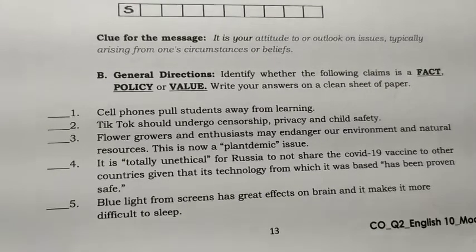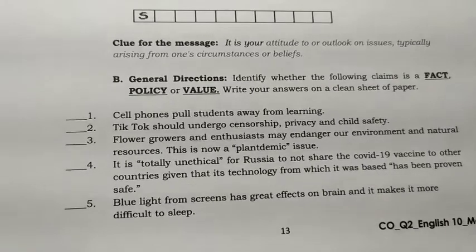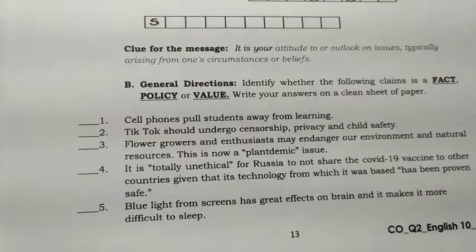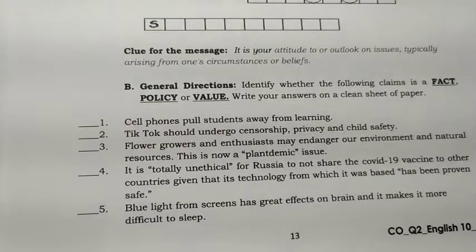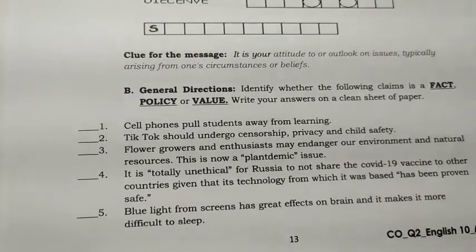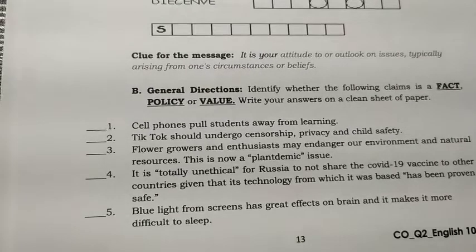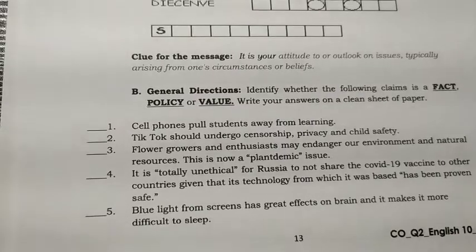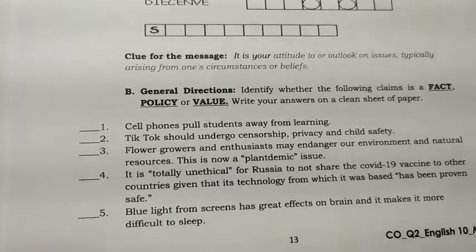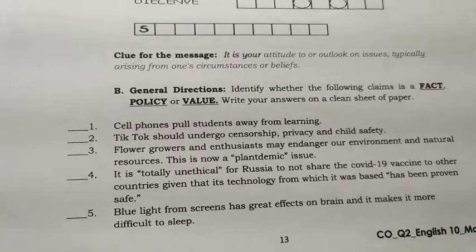Fact shows how true or not true something is. Policy asks how effective it should be — should it be followed or implemented or not. Value shows the significance and importance of a thing to be discussed, and what opinion or claim should be given about it. So: fact, policy, and value.